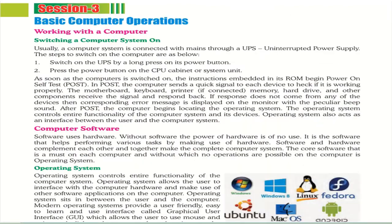Now, session three — basic computer operation. First, how to switch on a computer system. Usually a computer system is connected to the main power through a UPS — Uninterrupted Power Supply. The steps to switch on the computer are: switch on the UPS by a long press on its power button, then press the power button on the CPU cabinet or system unit, and the internal booting system will start up.